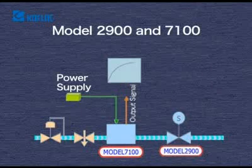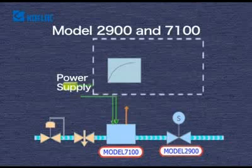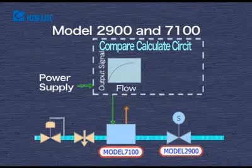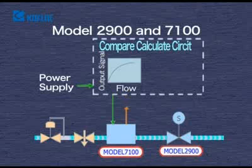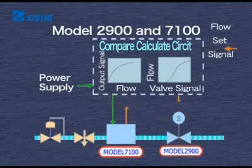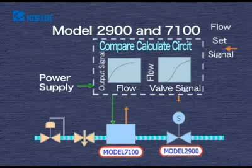Then install a model 2,900 valve in the same gas line. Prepare a comparison operation control circuit separately and input the output signal from model 7,100 sensor to the comparison operation control circuit. Arrange cables to send the flow control signal from the comparison operation control circuit to the model 2,900 valve, and input the flow setting signal to the comparison operation control circuit.